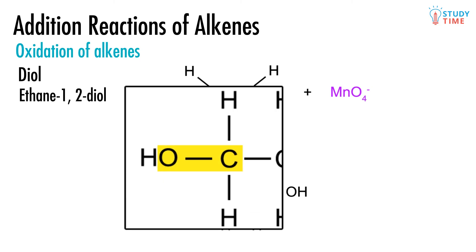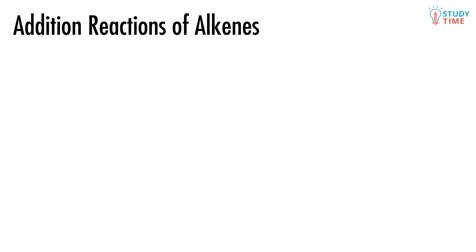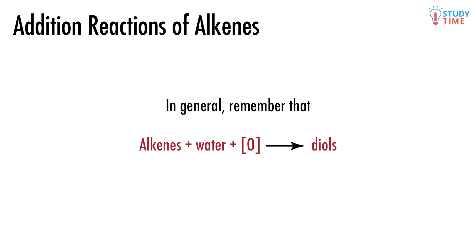Look closely at the far left OH group on the diol — it's written as HO. This is because the carbon is always bonded to the O, never directly to the H, so we write it as HO. This is pedantic but makes the structure clearer and helps avoid losing marks. In general: alkenes + water + oxidizing agent → diols.